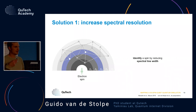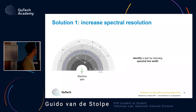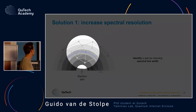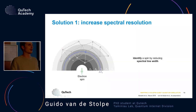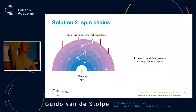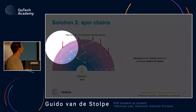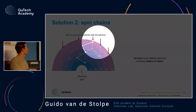That's why we need to increase the spectral resolution to still be able to identify different spins. We use a technique where we can see that one spin has a slightly different frequency than another, so we can still identify it. The other thing we develop is to be able to make long chains of spins to access spins in the back, because those spins are very hard to access with the electron directly, but we can still access them with a spin chain.